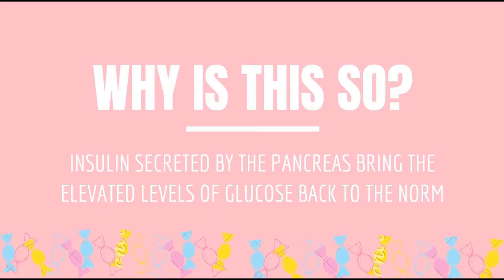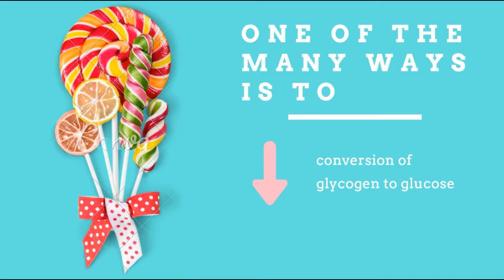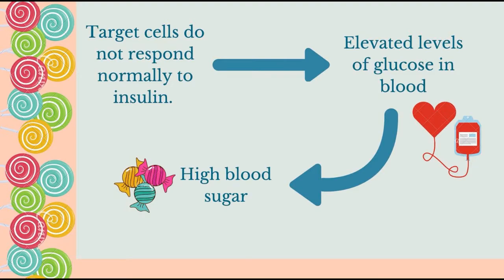Why is this so? This is because insulin is secreted by the pancreas to bring the elevated levels of glucose in the blood back to normal. One of the many ways it does so is by decreasing conversion of glycogen to glucose. Since the target cells do not respond normally to insulin, there are still elevated levels of glucose in the blood, resulting in high blood sugar.